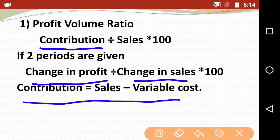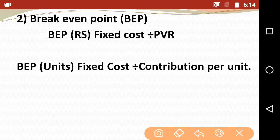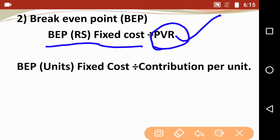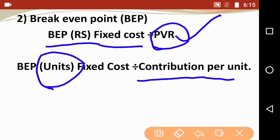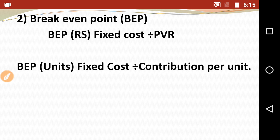Contribution is calculated as Sales minus Variable Cost. Next is Break Even Point, called BEP, calculated two ways — BEP in rupees and BEP in units. BEP in rupees: Fixed Cost divided by PVR. BEP in units: Fixed Cost divided by Contribution per unit. Whenever units are asked, use Contribution per unit in the denominator — not PVR. PVR is the base; if PVR is wrong, BEP will be wrong too.